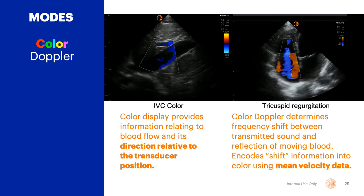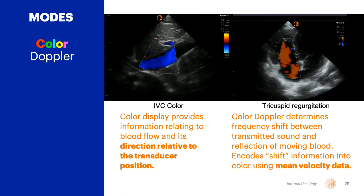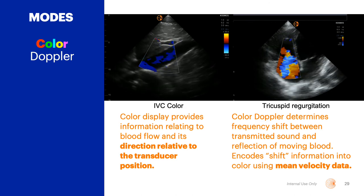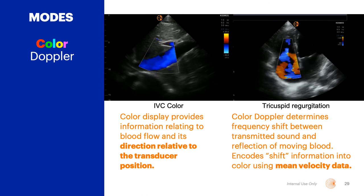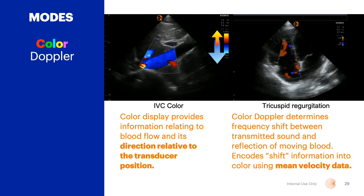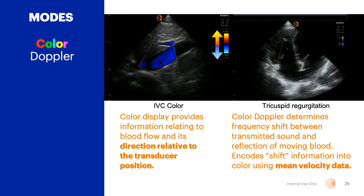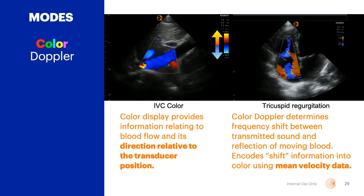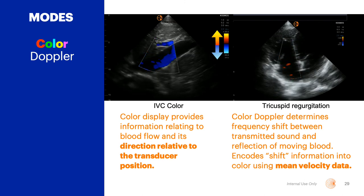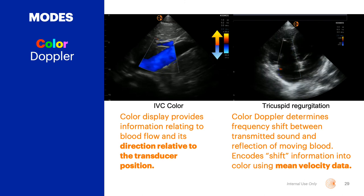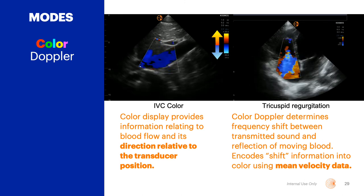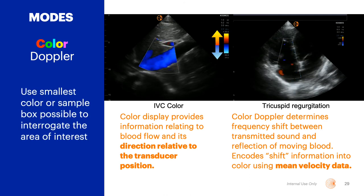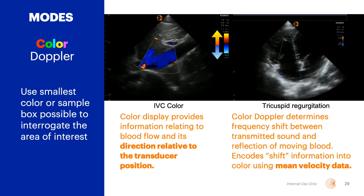Color and spectral Doppler are available on the Cosmos system. Doppler, including color, provides information relating to blood flow and its direction relative to the transducer position. Once color is selected, we examine the position of the color scale bars. In this example, flow towards the transducer appears in the red and yellow color scale, while flow away from the transducer appears in shades of blue. It is not a visual representation of arterial versus venous flow. Color Doppler determines frequency shift between transmitted sound and reflection of moving blood, and encodes the shift information into color using mean velocity data. Use the smallest color box size to interrogate the area of interest to maximize system performance and frame rate.